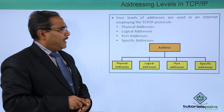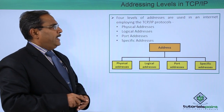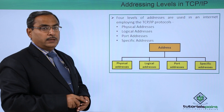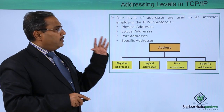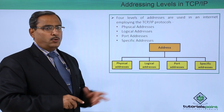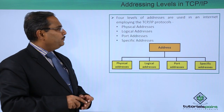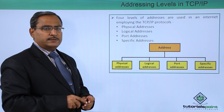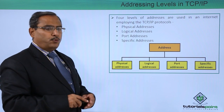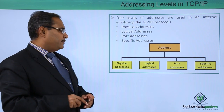Four levels of addresses are used in an internet employing the TCP/IP protocol. The first one is the physical address, the next one is the logical address, the next one is the port address, and the last one is the specific address.